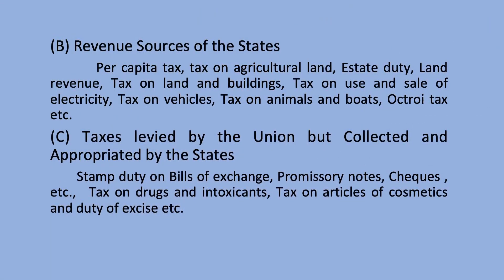Per capita tax is a flat local tax payable by every citizen residing in that local area. Similarly, octroi tax is levied by the local government on citizens residing in that area. There are also taxes levied by the union but collected and appropriated by the states, such as stamp duty on bills of exchange, promissory notes, checks, etc., tax on drugs and intoxicants, and tax on articles of cosmetics and excise duty.